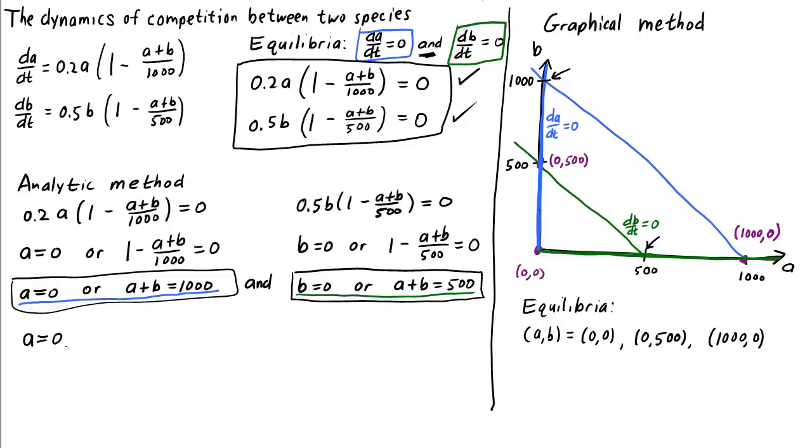If A equals zero, we've satisfied dA/dt equals zero, so we don't need to look at the left equation anymore, and we can focus on the second equation, dB/dt equals zero. Here again, we have two choices, either B equals zero, or A plus B equals 500. Let's take the first choice, B equals zero. If A equals zero and B equals zero, we've satisfied both dA/dt equals zero and dB/dt equals zero, so this is an equilibrium.